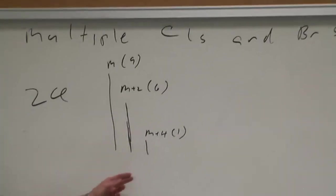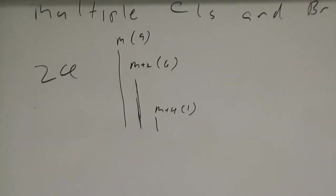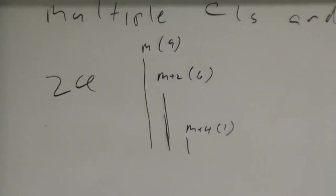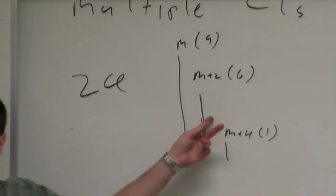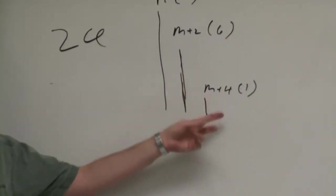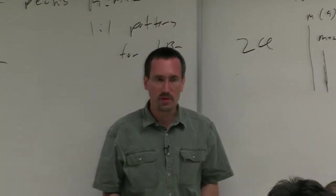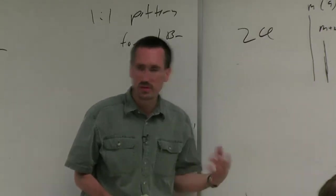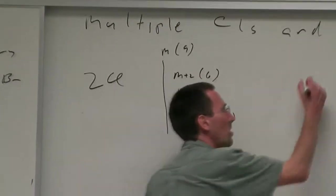Much of spectral analysis is about pattern recognition, not numerical analysis like a computer. The human brain is fantastically good at picking out patterns. You'll look at something and say hey, this looks interesting. There's this really big M plus 2 peak that I wouldn't expect, this really big M plus 4 peak. Then you think oh, it's got to be some element with some substantial amount of isotopes.